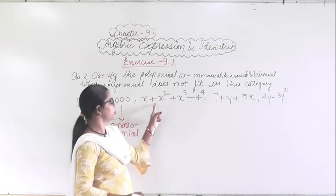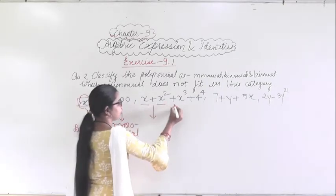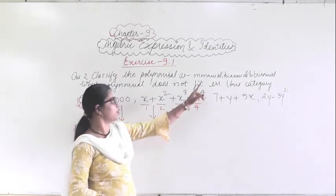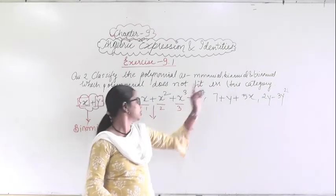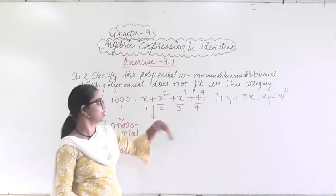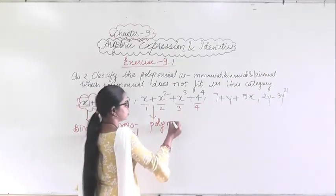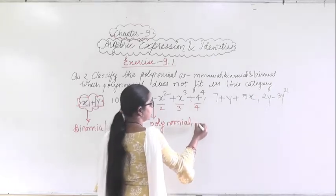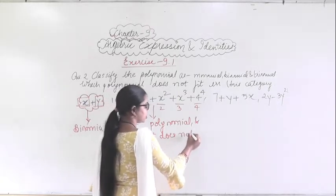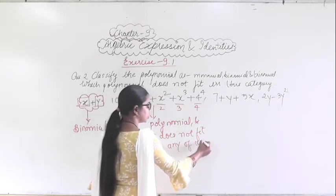Similarly, here you are given with x plus x² plus x² plus x⁴. If you see, this is the first term, this is the second, this is the third — 1, 2, 3 — and this is the fourth. You are getting more than 3 terms. More than 3 means it is a polynomial, and it does not fit in any of the other categories.